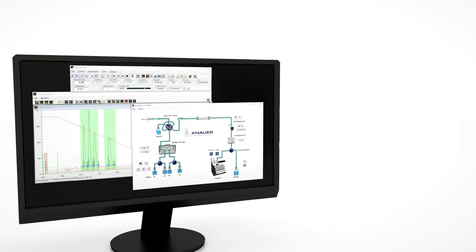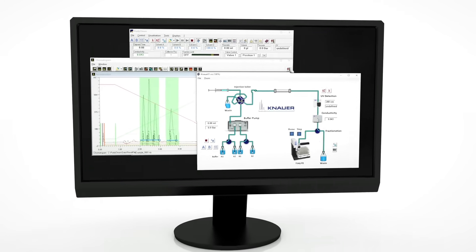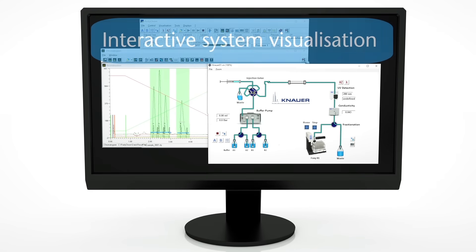Control your runs with intuitive FPLC software Purity Chrome. Pre-designed methods are included in the software and can be easily adapted by changing the column volume. Make the flow through the system visible and stay in control.